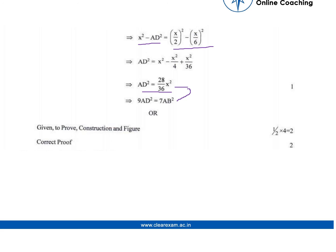Now x is nothing but AB, so we shift 36 to the left side and 28 to the right side. Both are divisible by 4, so it becomes 9AD² equals 7AB², which is what we had to prove.